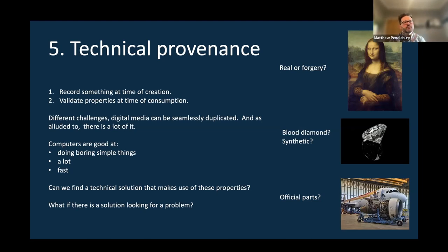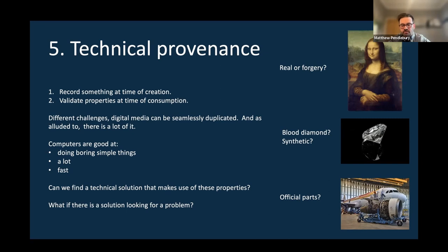Looking at this from the point of view of provenance: where did a diamond come from — is it a blood diamond, a synthetic diamond, or mined by De Beers? Where is a piece of artwork from — can I prove beyond reasonable doubt it's not a forgery? Provenance is an established concept, and we can do it technically.